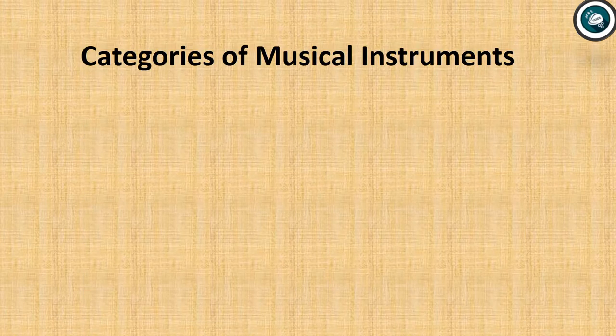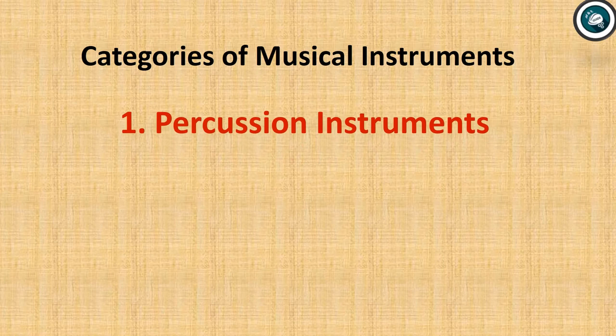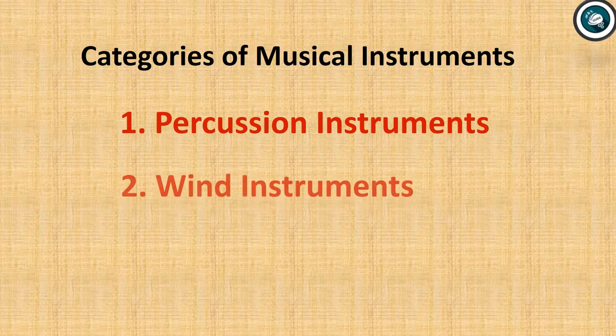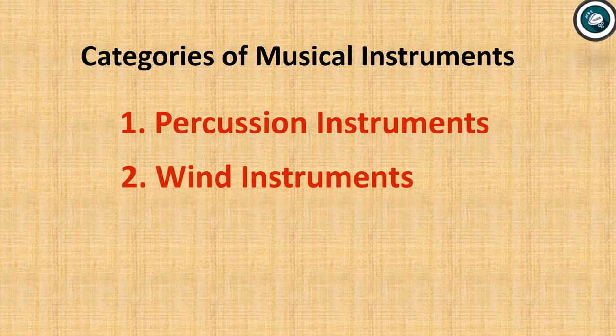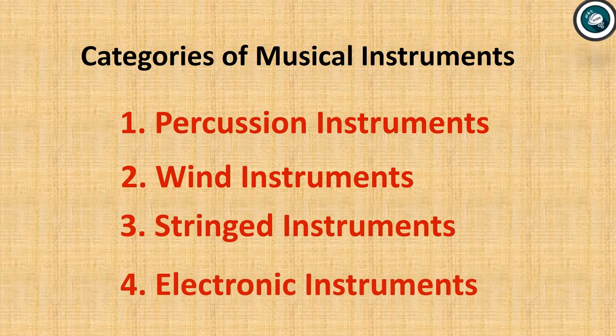Examples of categories of musical instruments include percussion instruments, wind instruments, stringed instruments and electronic instruments.